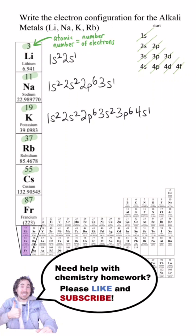Rubidium has 37 electrons: 1s2, 2s2, 2p6, 3s2, 3p6, 4s2, 3d10, 4p6, 5s1.